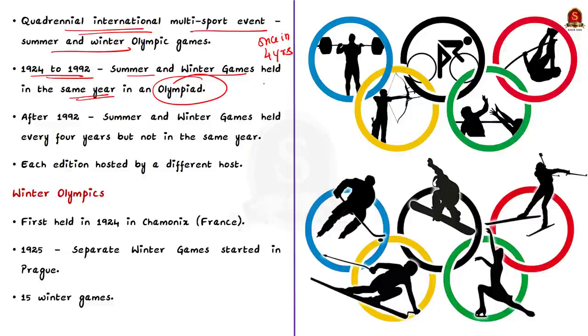But after this, summer and winter Olympics are still held every four years, but they are held in different years of an Olympiad. The summer games are celebrated during the first year of an Olympiad, and the winter games are held in the third year. Also, note that each edition of the game is hosted by a different host. In this regard, Japan hosted the Summer Olympics in 2020.